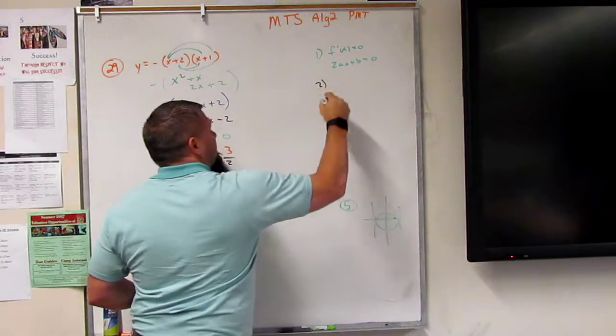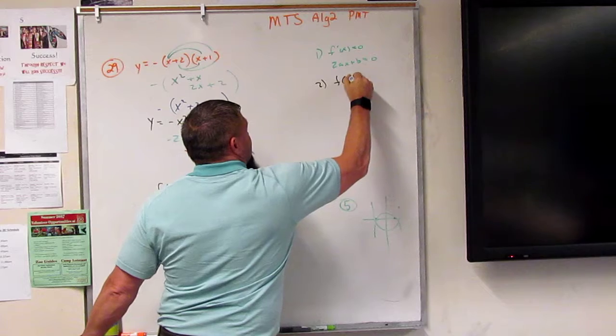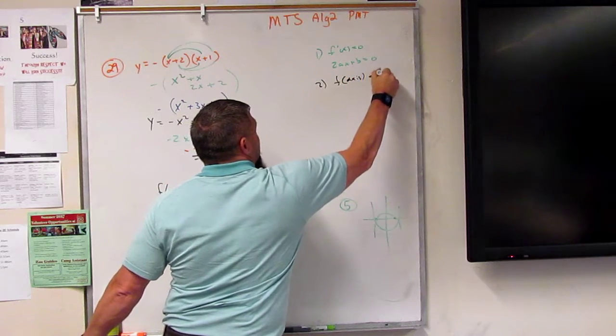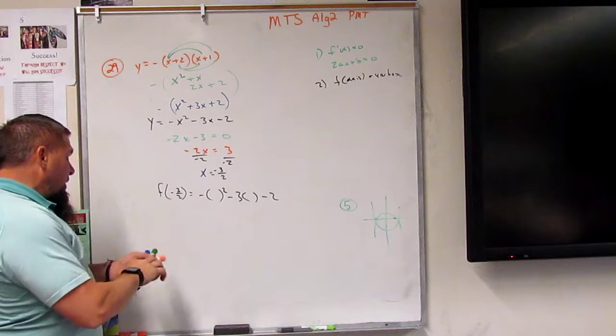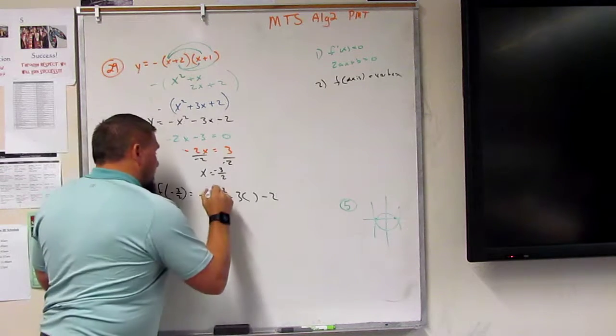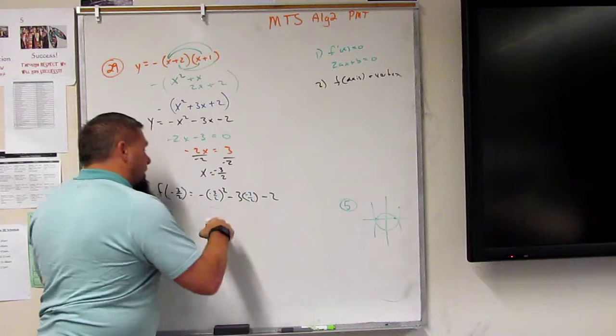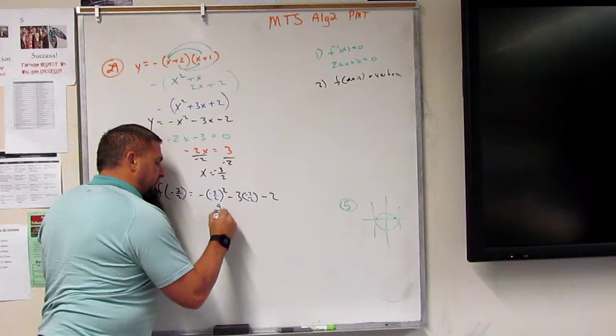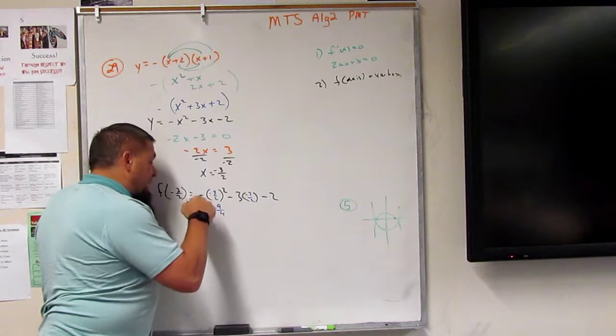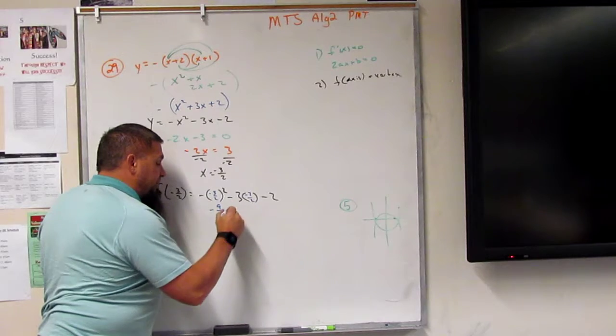Remember, that's part 2, which is just plug it in. So f of the axis is equal to the vertex. So I'm just plugging in negative 3 over 2. Negative 3 over 2. Now this squares is 9 over 4.